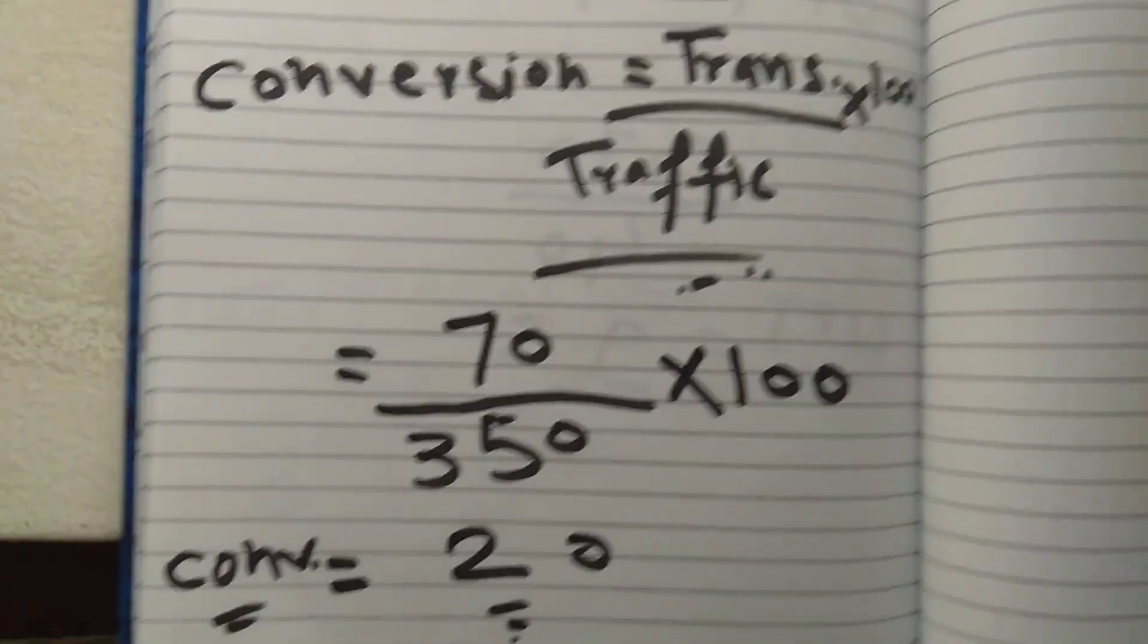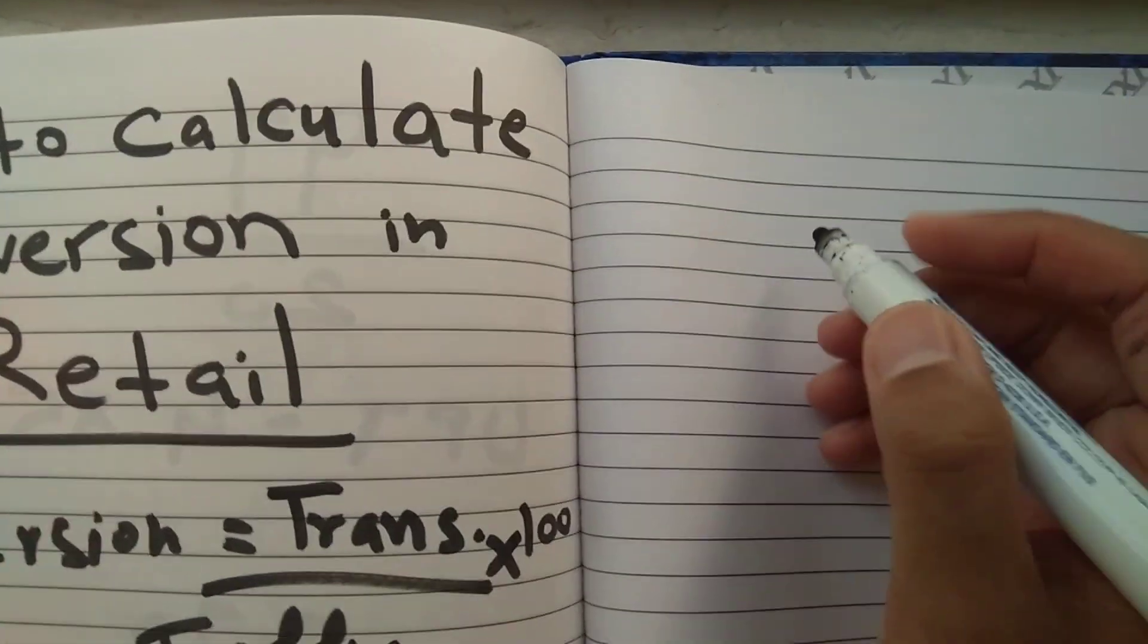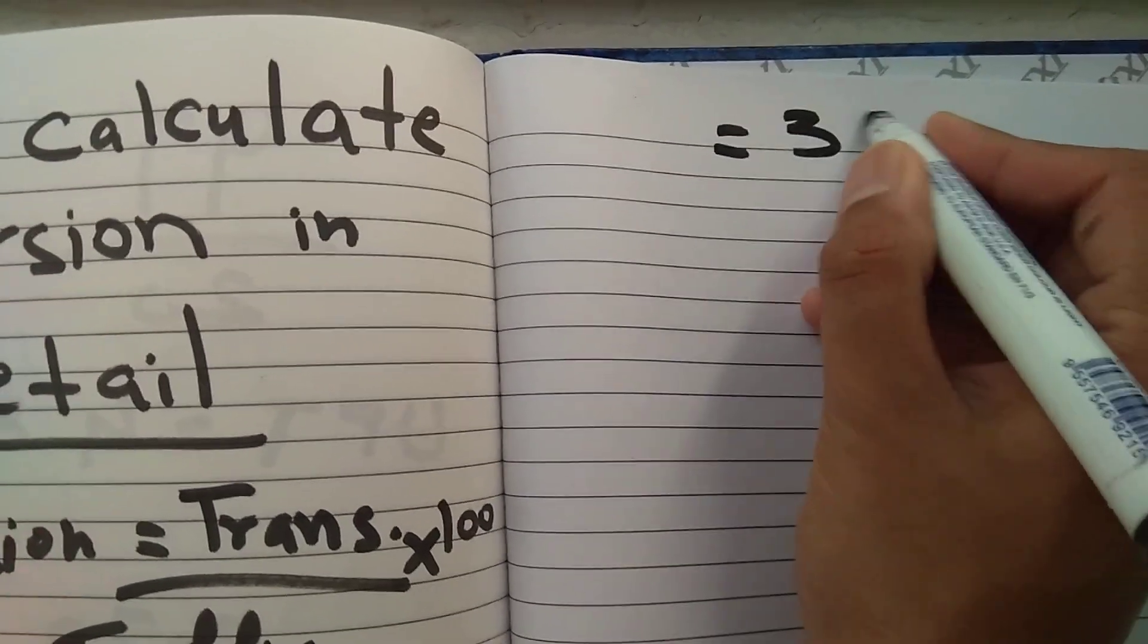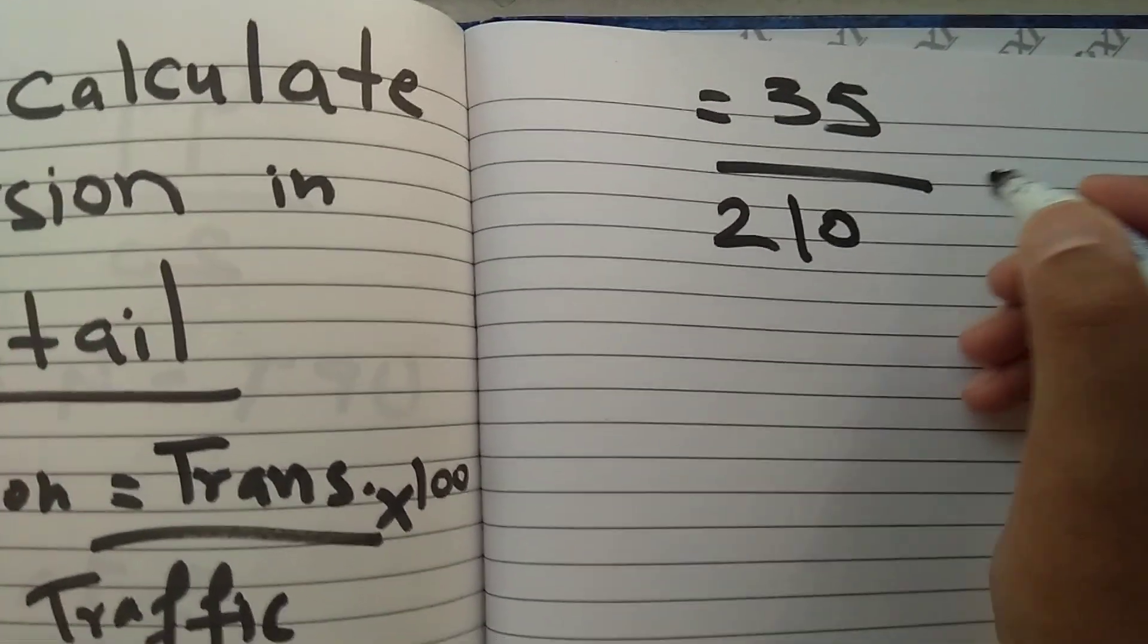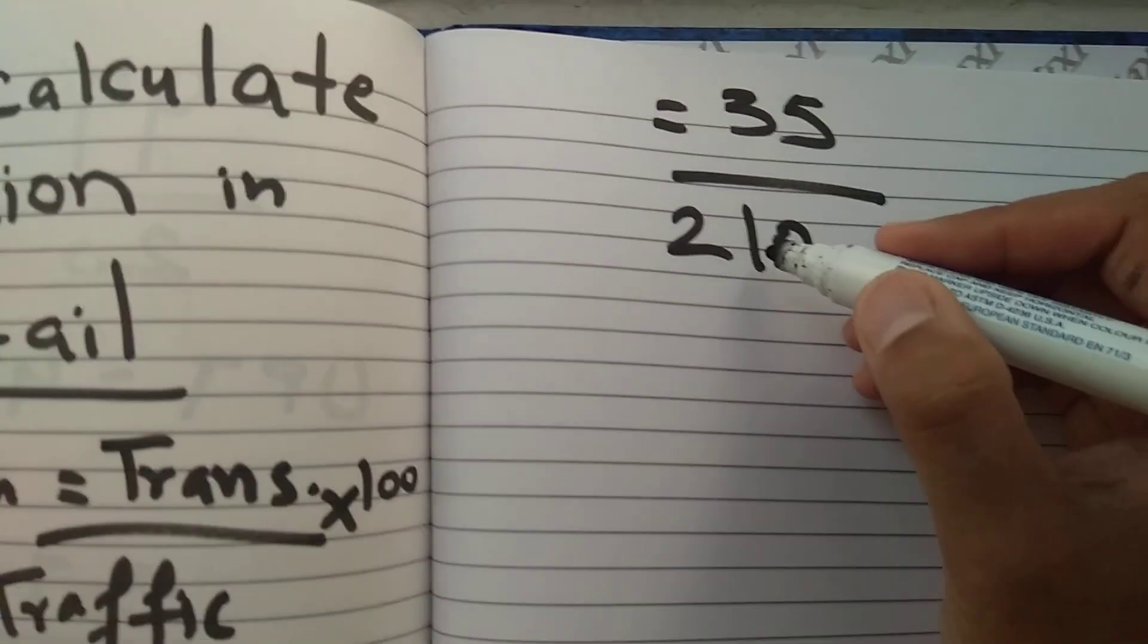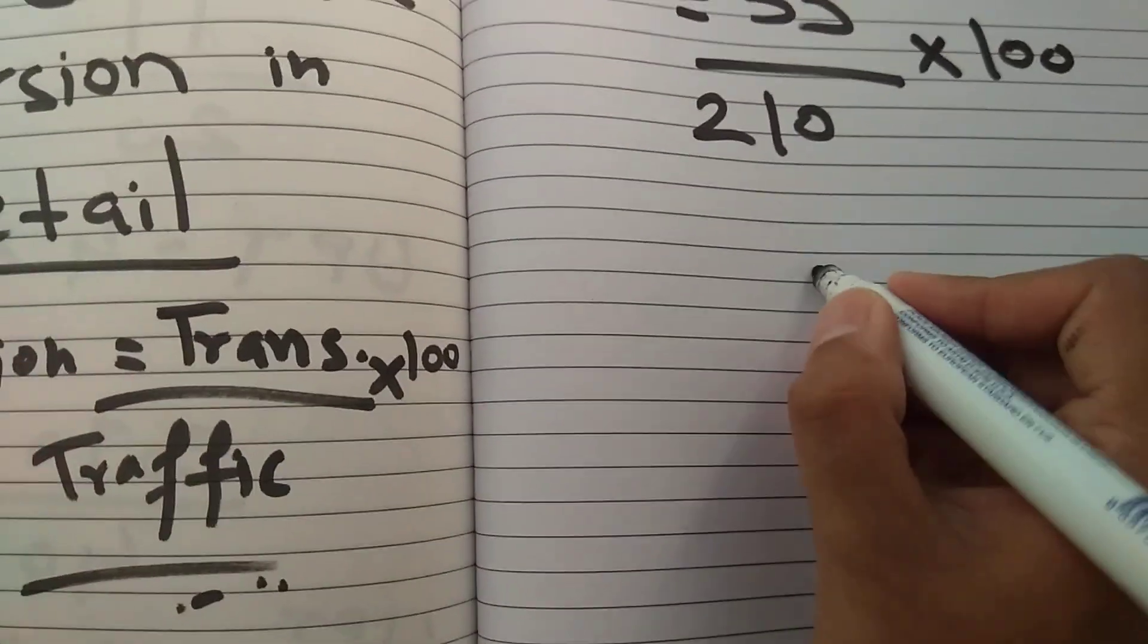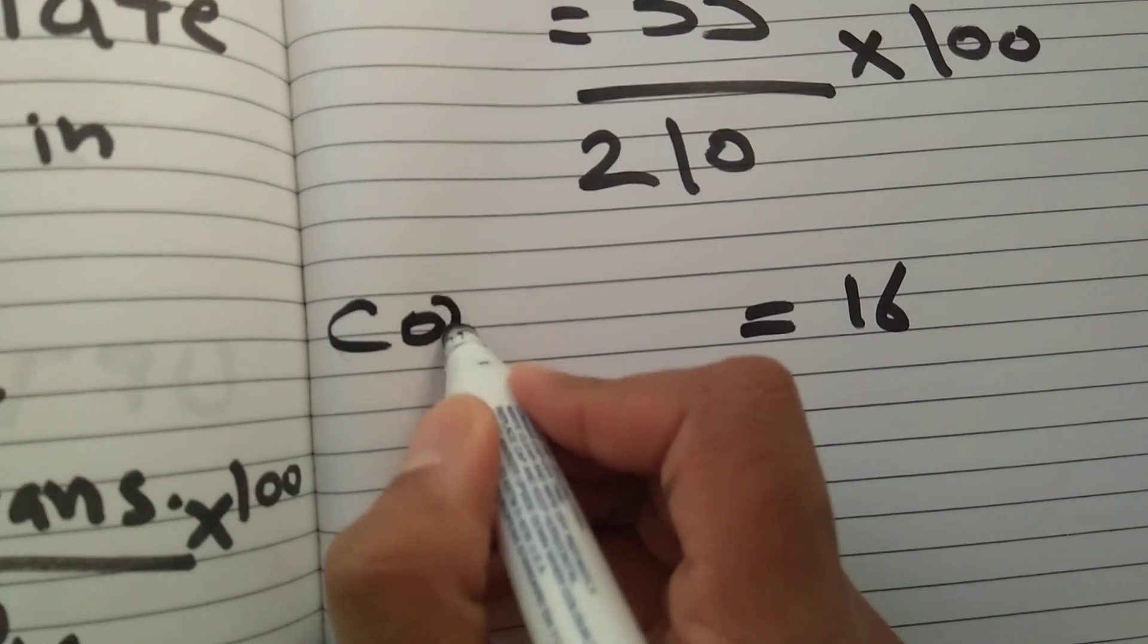There is one more example to elaborate more. Let's say you have 35 transactions you made and 210 people enter into your shop. Then you have to divide it by 210 and then multiply it with 100. So the answer is 16. We can say the conversion for that day is 16.